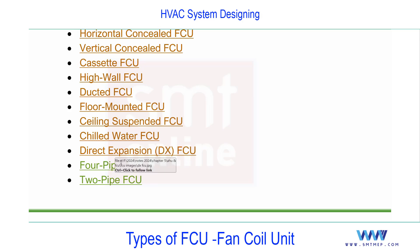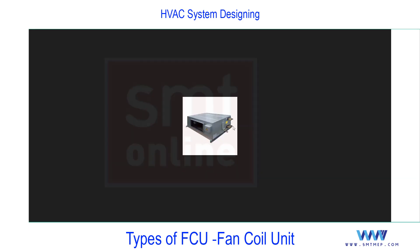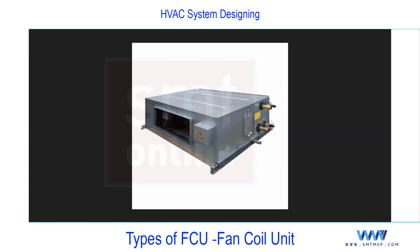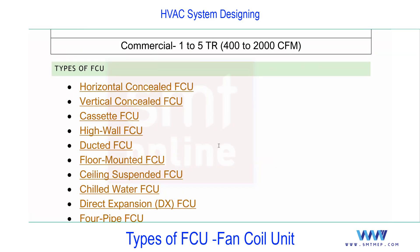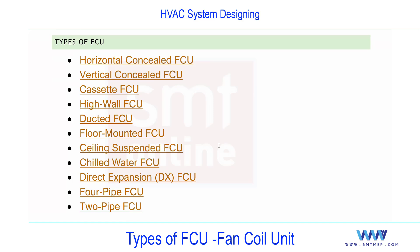A two-pipe FCU has one shared coil for either cooling or heating. A four-pipe FCU has separate coils — one cooling coil connected to the chiller and one heating coil connected to the boiler — allowing independent use of each as required. This makes the four-pipe system more flexible for year-round conditioning.